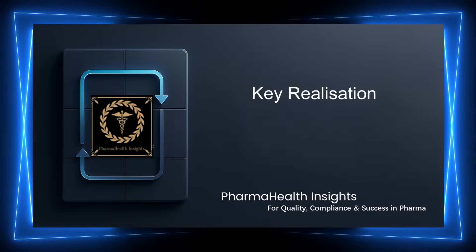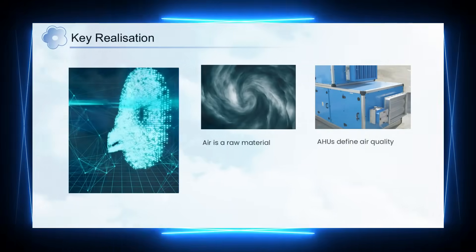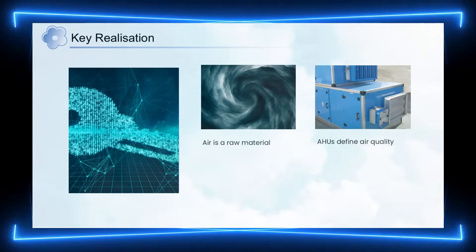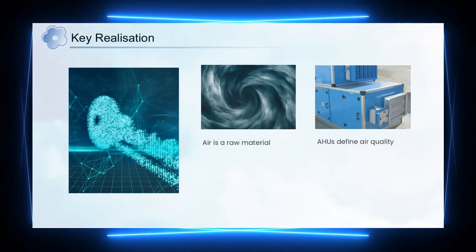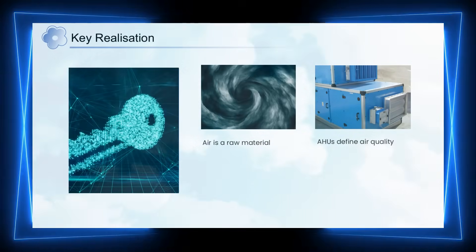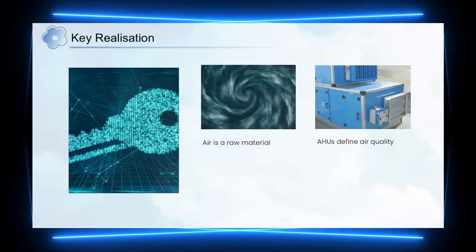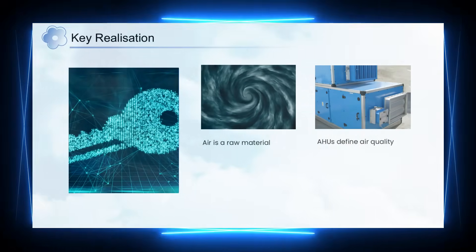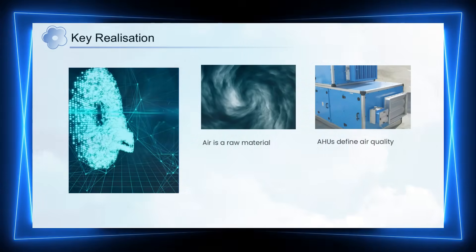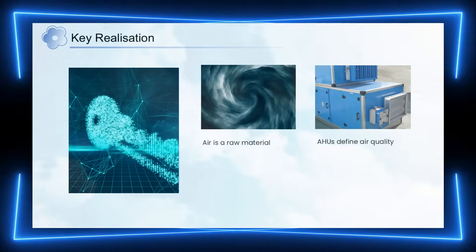So what is the biggest takeaway from all this? In pharmaceutical manufacturing, air must be treated just like any other critical raw material. Its quality directly influences the manufacturing environment and, ultimately, the quality of the product. Because AHUs are responsible for conditioning, filtering, and directing air, they play a central role in maintaining this quality. This is why AHU design, operation, and documentation require the same level of attention as other critical GMP systems.